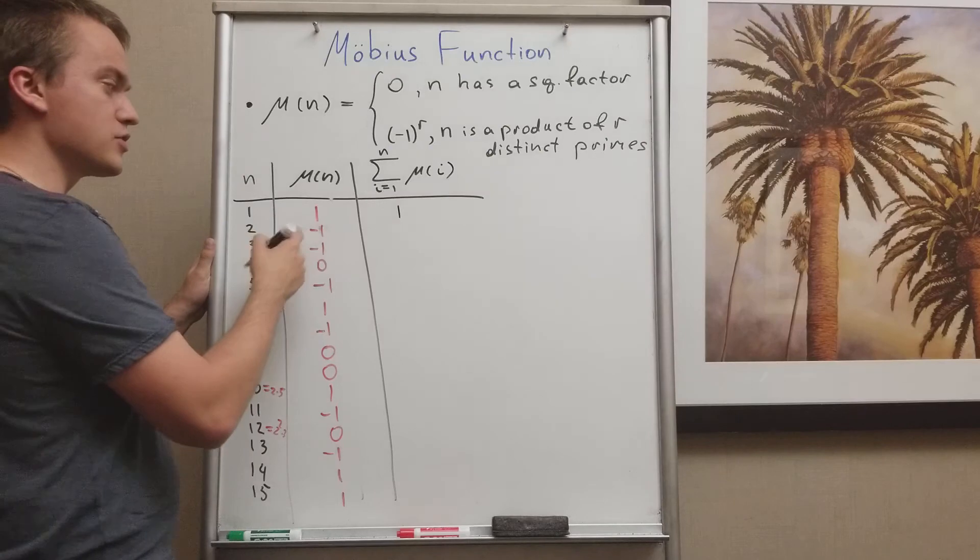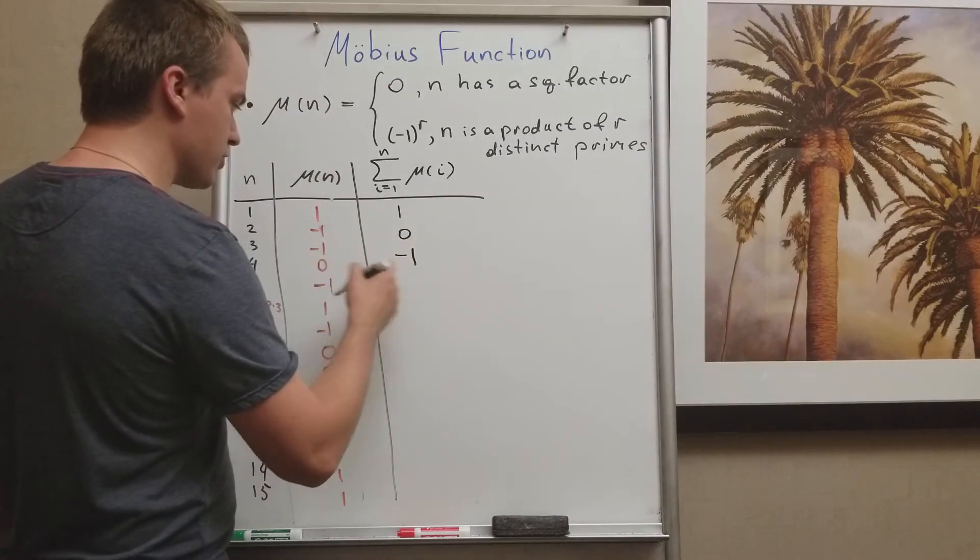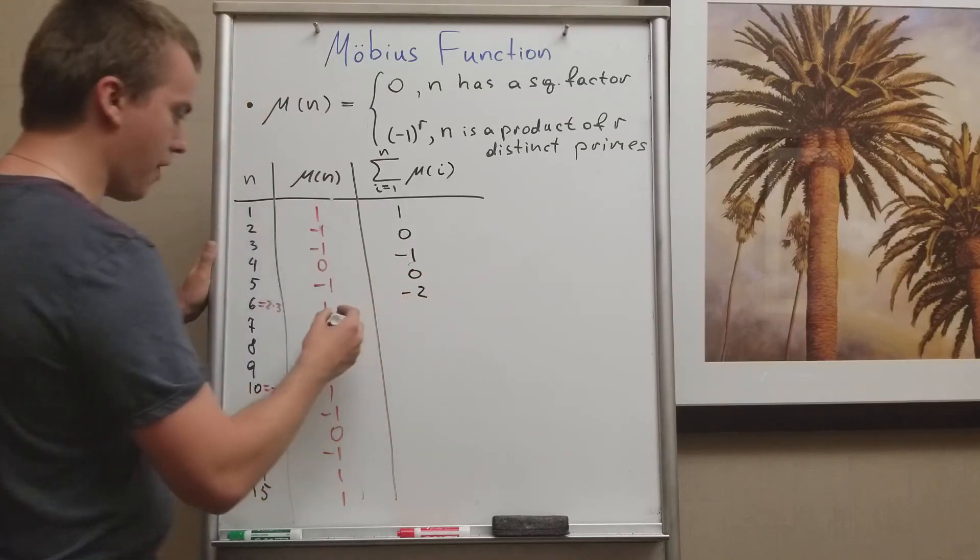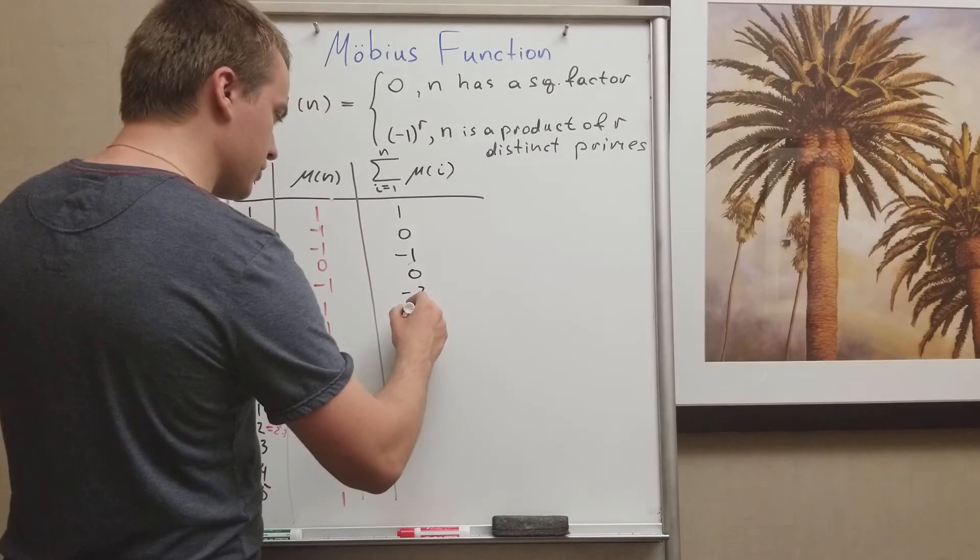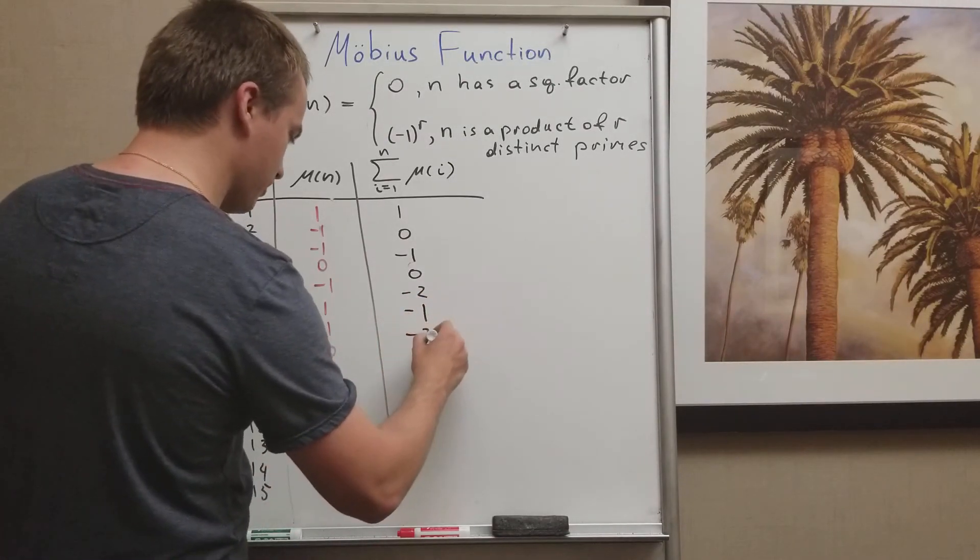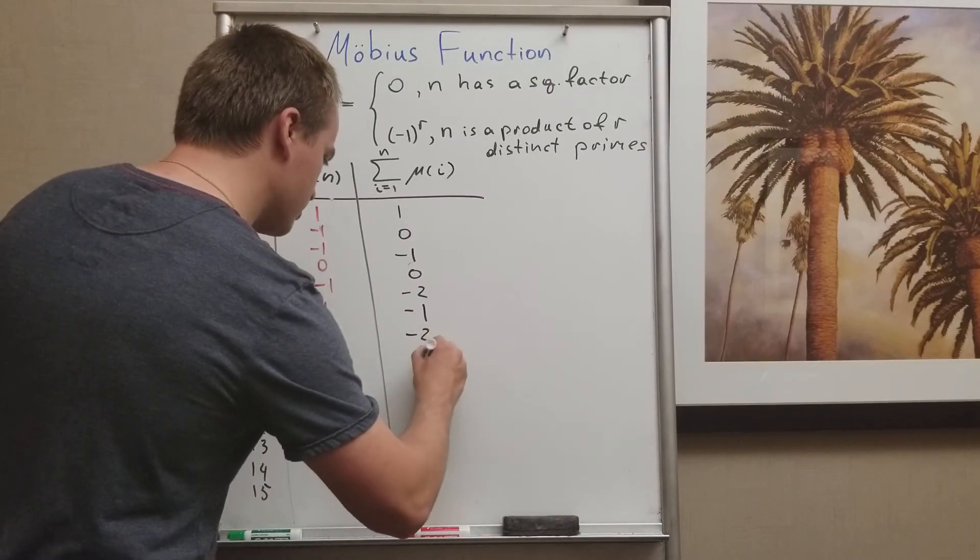When n equals 1 we have 1, and then 1 plus (-1) is 0. But we're going to subtract 1 again, we're going to get negative 1. For 0 we're going to keep 0, and then we're going to get negative 2. And then when we add 1, we're going to change our negative 2 to negative 1. But we're going to get negative 2, then I'm going to get negative 2.